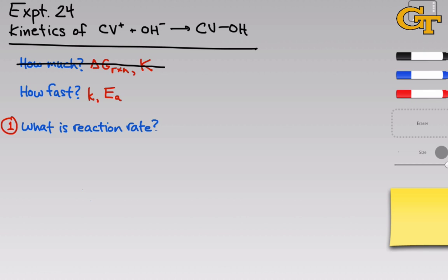Rates are all about change, and reaction speed is all about time. So reaction rate is all about the change in the amount of a reactant or product with respect to time. Since volumes can change and reaction rate is concentration dependent, we define rate as the change in concentration per unit time. To keep things simple, just think of this as a change in number of moles per unit time for a constant volume situation.